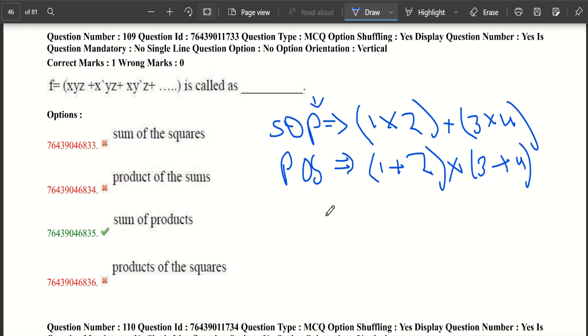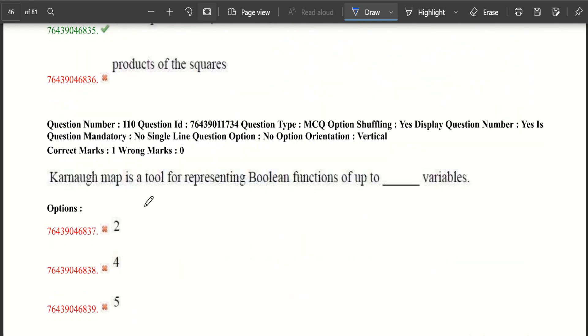Now POS. This POS is like we are producting the sums. It is like 1 plus 2 into 3 plus 4. This is the difference. And if you see this question, here multiplication is done, XYZ multiplication is done. And then they are added. So it becomes sum of products.